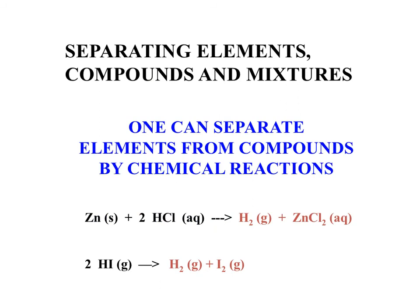You can separate elements from compounds using chemical reactions. To take elements out of a compound, you need to do it chemically. Here is a molecule HCl(aq) — aqueous, meaning it's in water. To remove the hydrogen from the chlorine, you can add a metal in solid form. Zinc is a good example — it reacts with HCl, and the hydrogen comes off as H₂ gas, so you see bubbles in the solution. Zinc chloride remains in the aqueous solution.